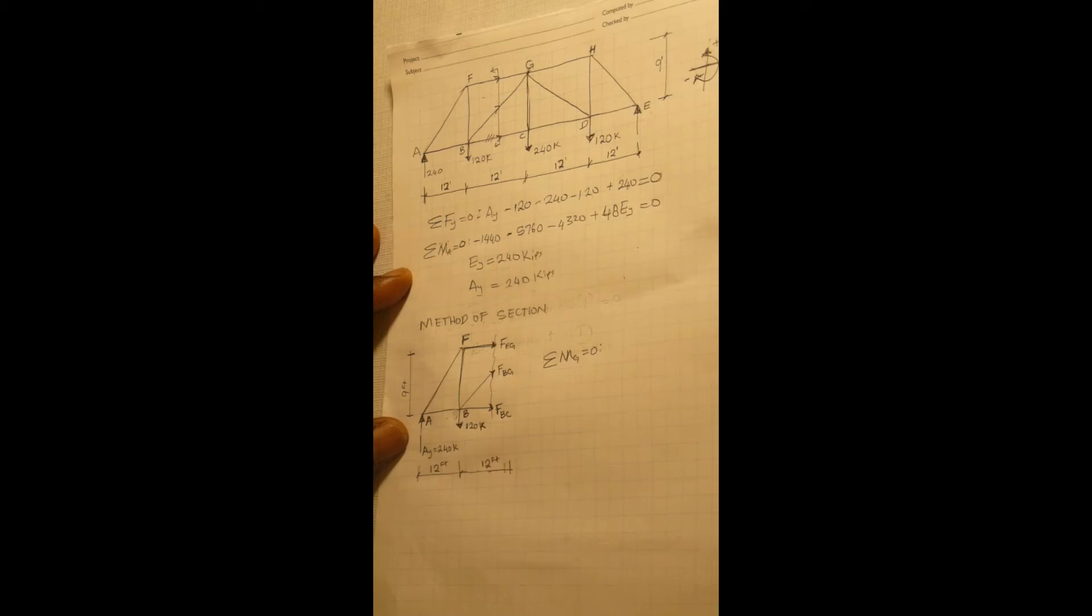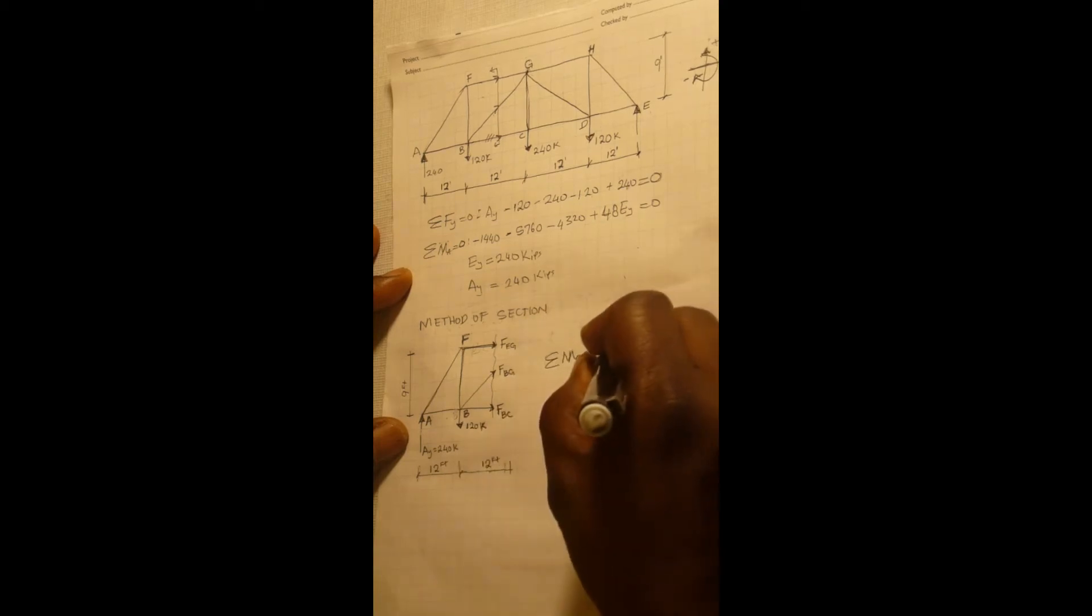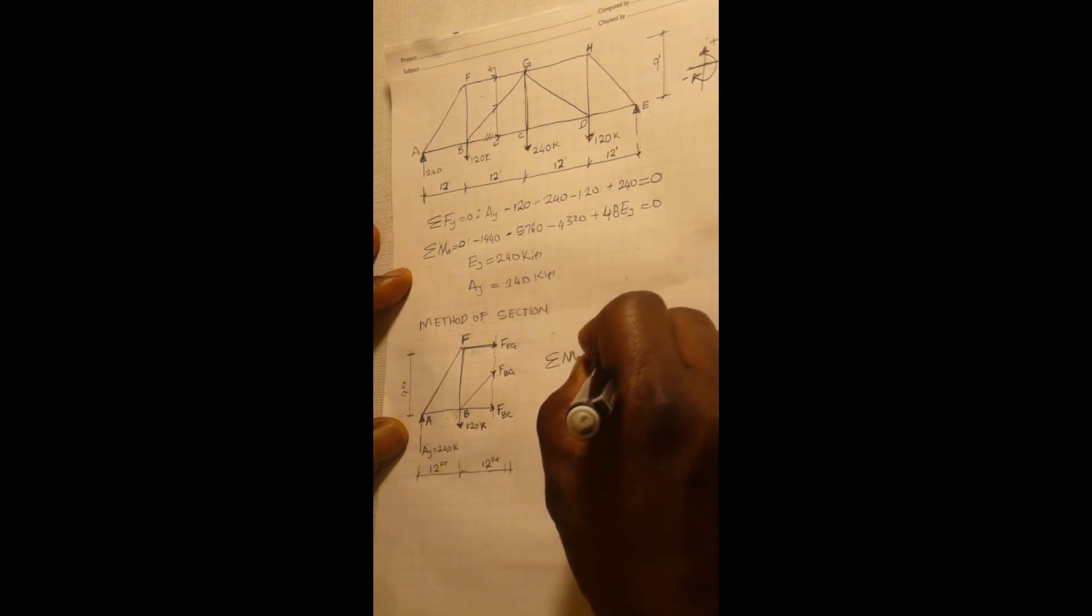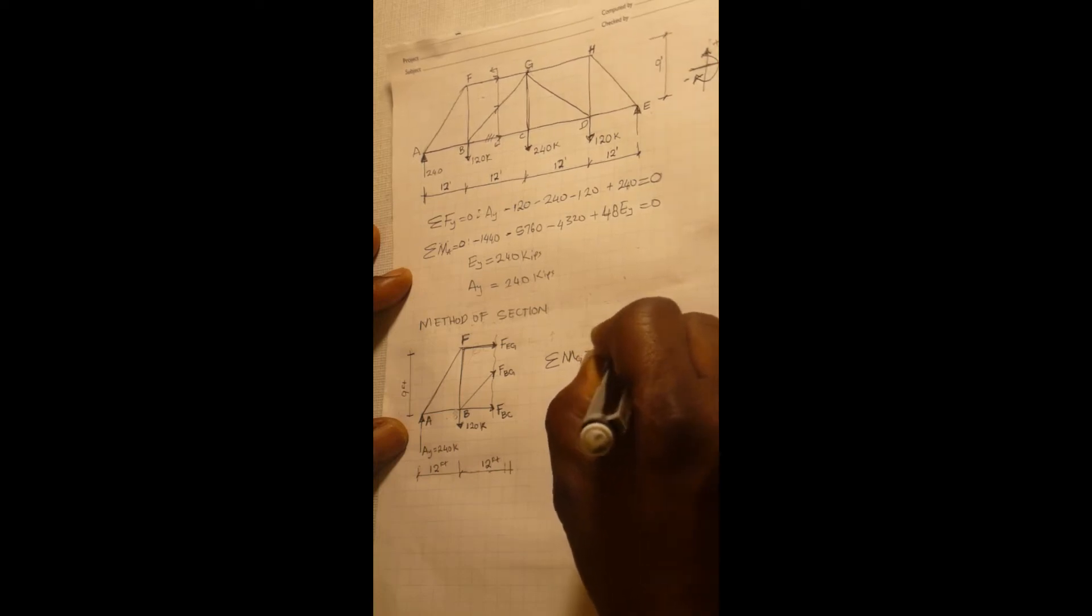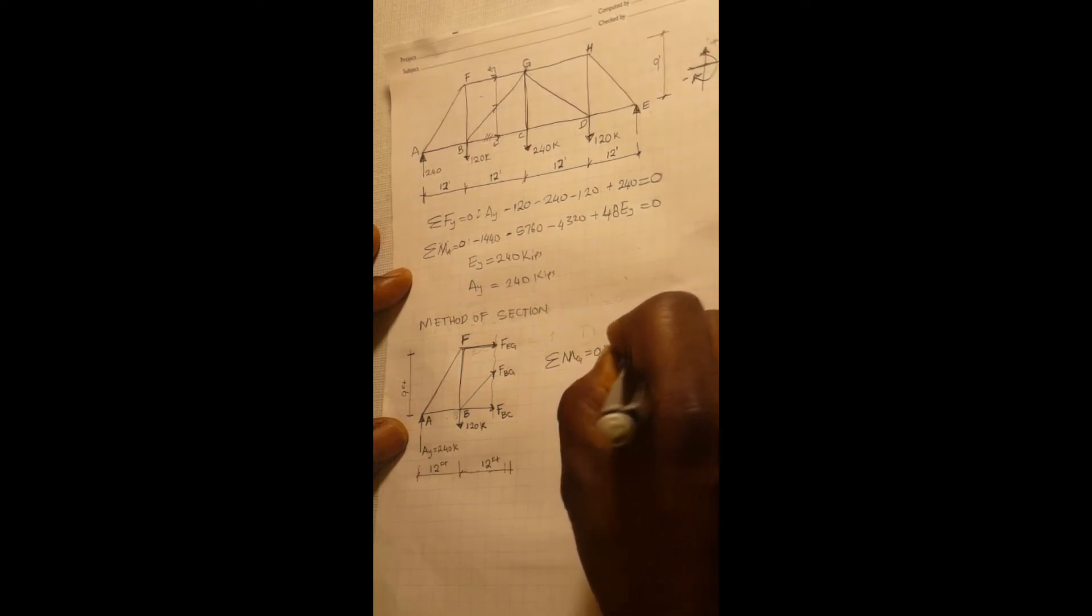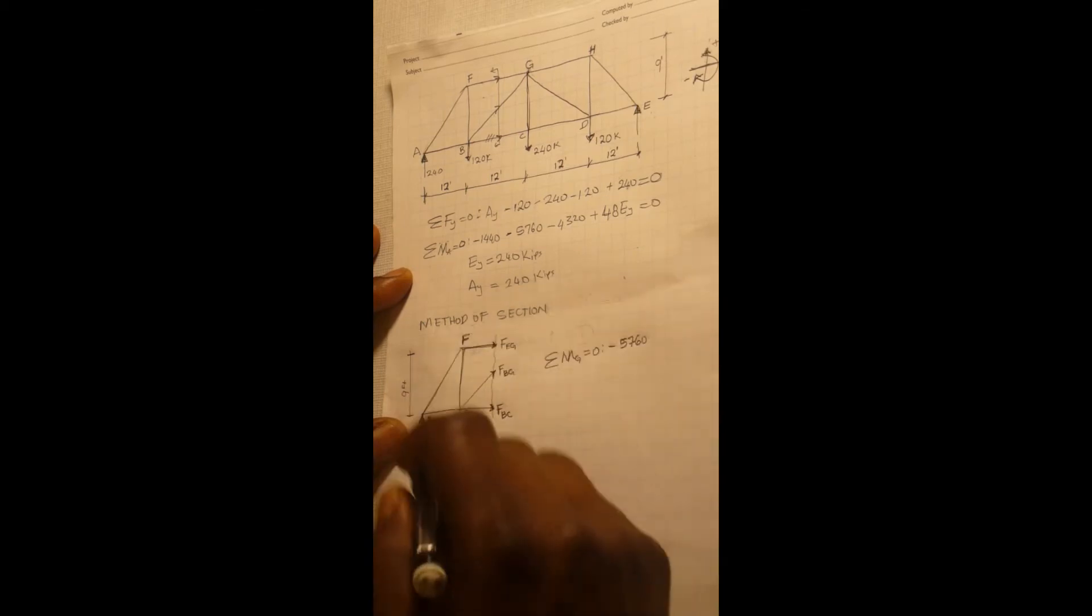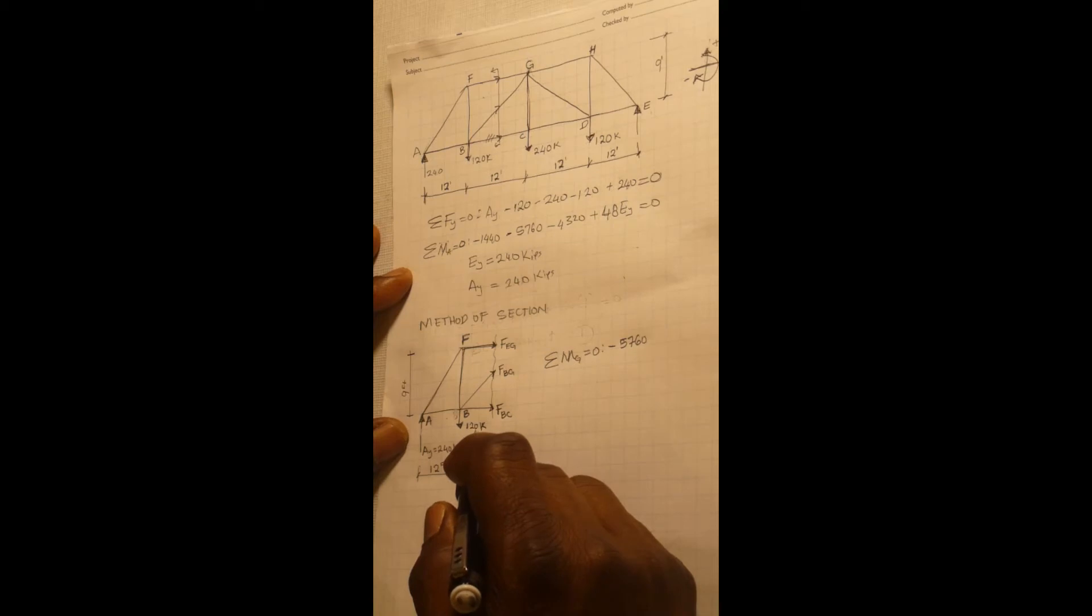that would be negative 5760 kip-feet. And then at joint B, there's a negative force of 120 kips. So that creates